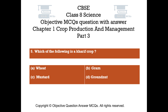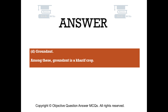Question number 5. Which of the following is a Kharif crop? Option A: Wheat. Option B: Gram. Option C: Mustard. Option D: Groundnut. The right answer is option D — Groundnut. Among these, groundnut is a Kharif crop.